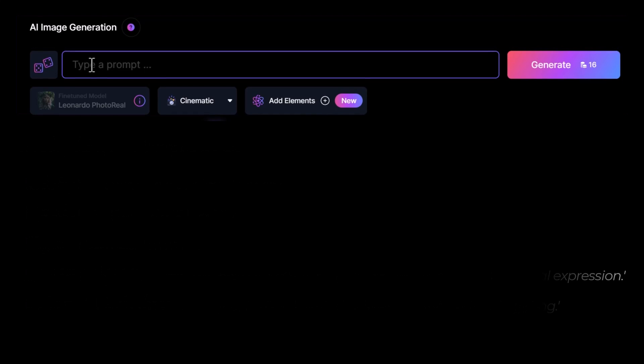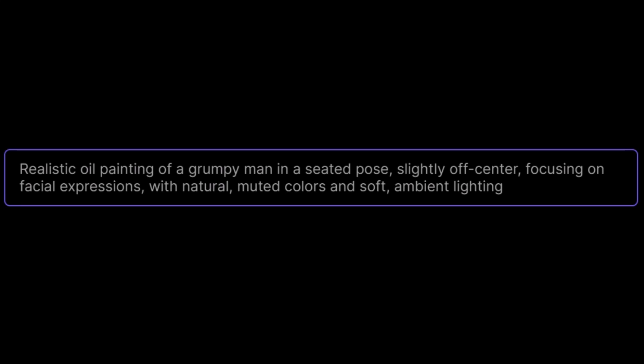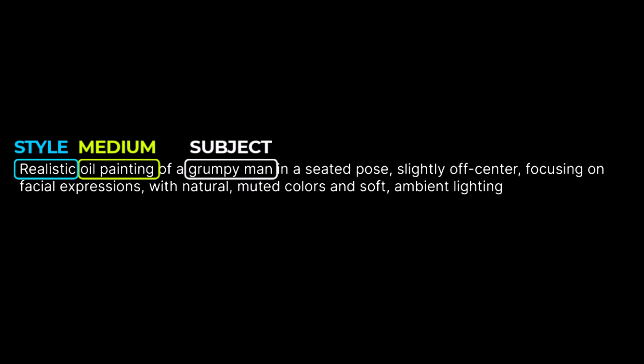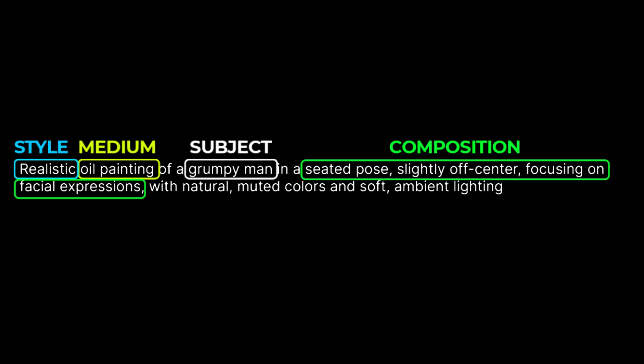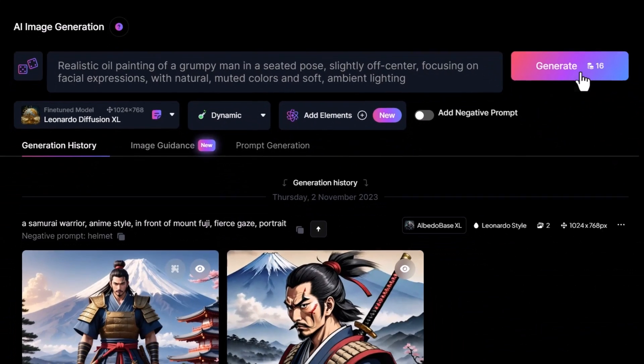So here's an example of a full prompt: "Realistic oil painting of a grumpy man in a seated pose slightly off center, focusing on facial expressions, with natural muted colors and soft ambient lighting." If you look at this prompt you can see where we've included our subject with the grumpy old man, our medium, the style, the composition, and the color and lighting from our example. Now let's zoom back out and submit that prompt to see what results we get.